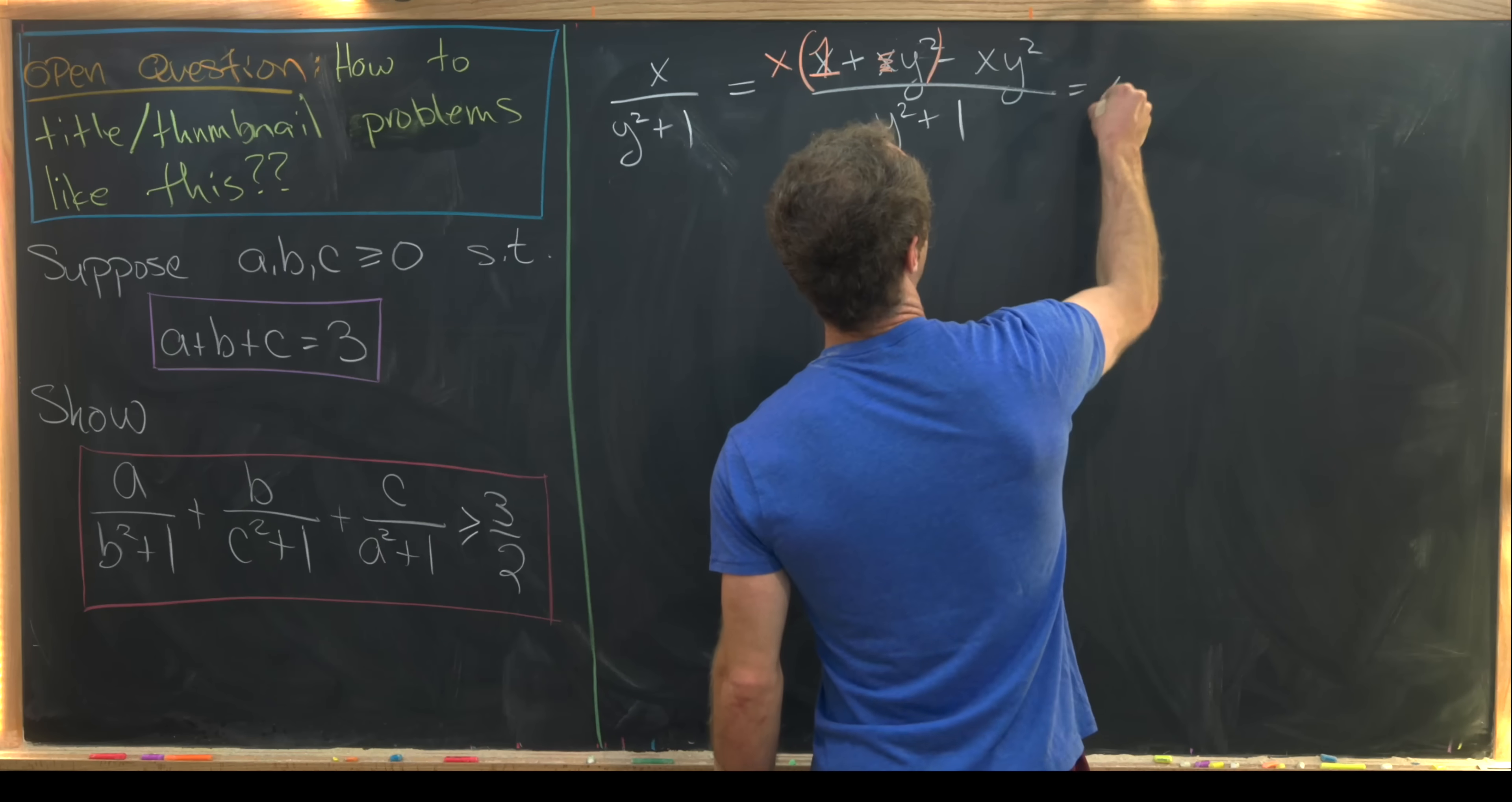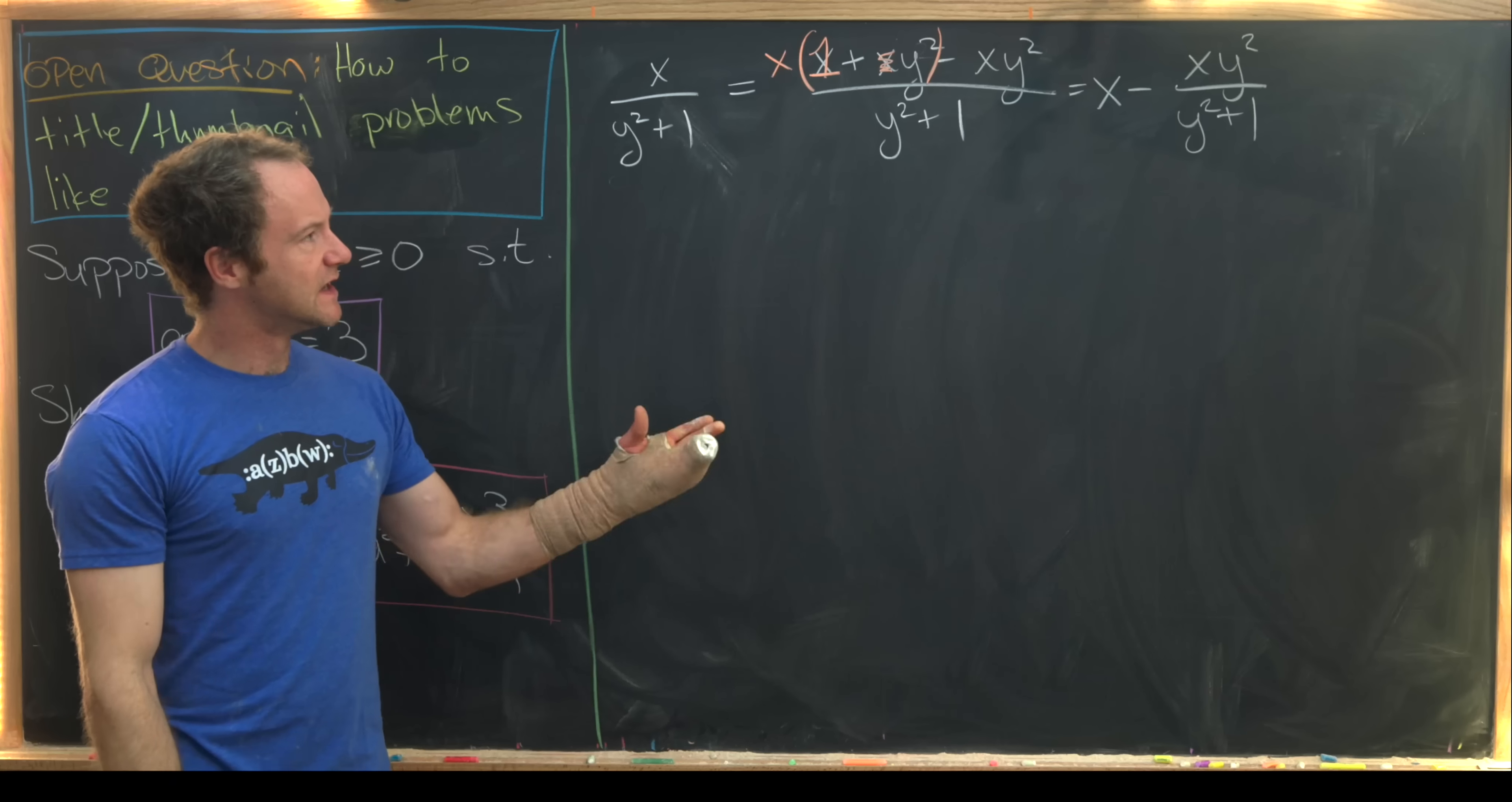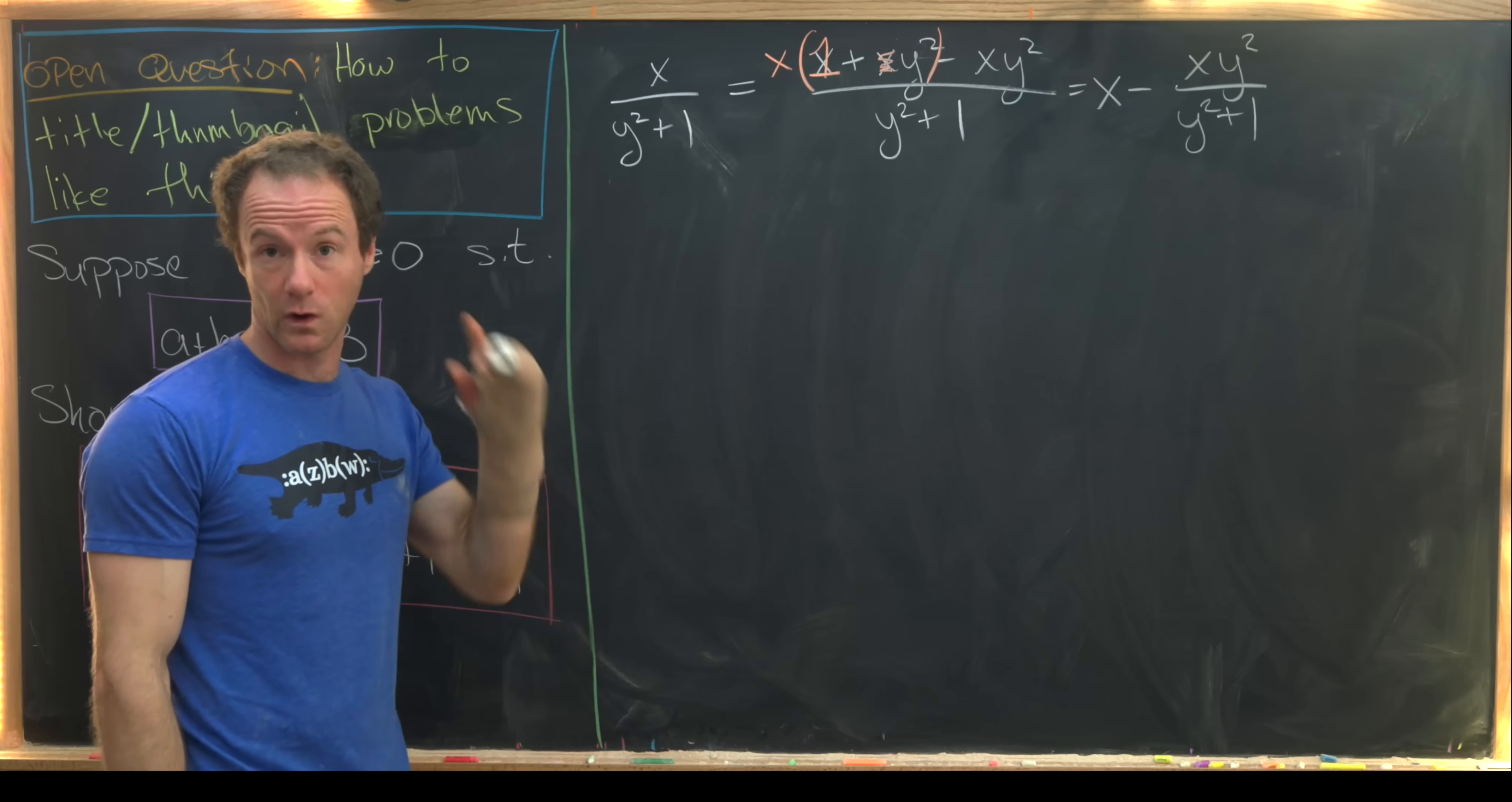So let's see what we've got. We're going to have x minus x y squared over y squared plus 1. Now we'd like to do some sort of inequality that makes this leftover term a little bit easier to work with.